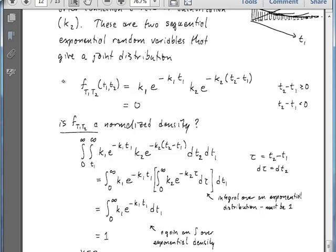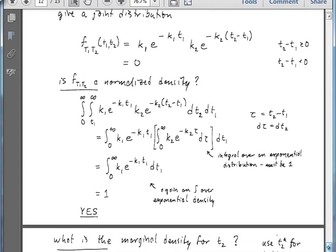It's pretty remarkable when you think about the process correctly and write down the distribution. It's a good check to go back and see whether it comes out to be normalized. And when you've thought about it correctly, it will.